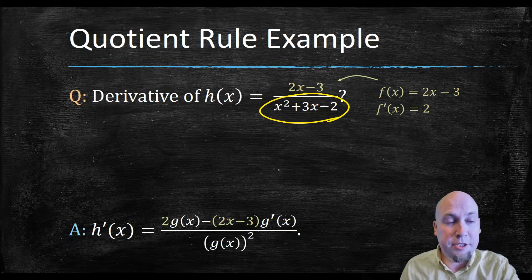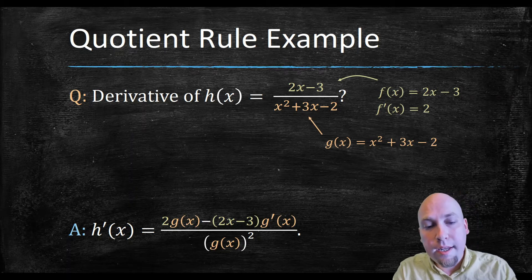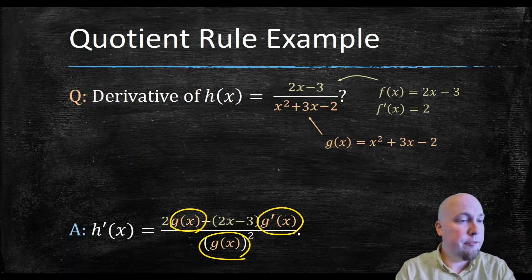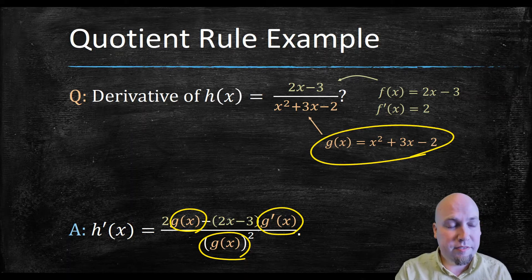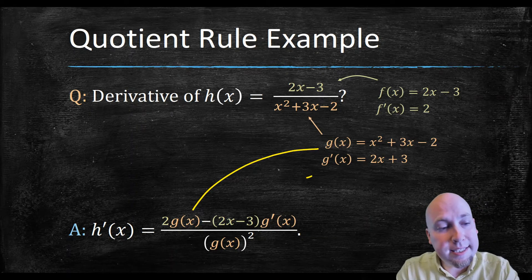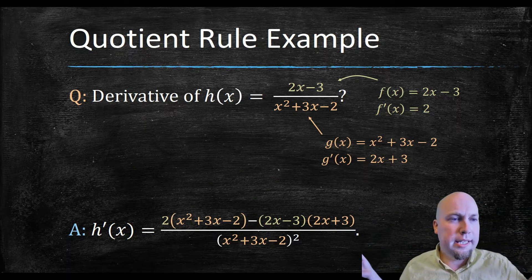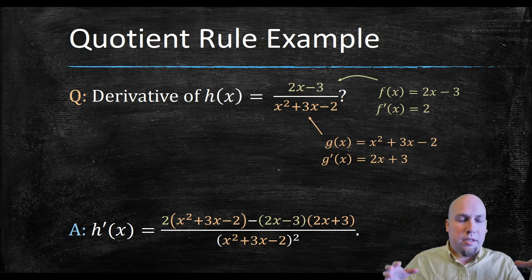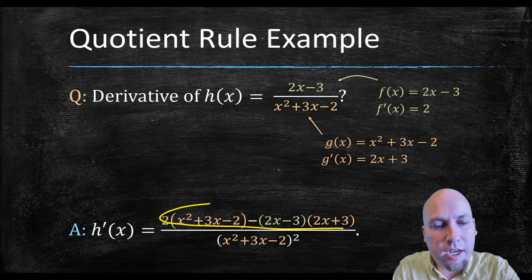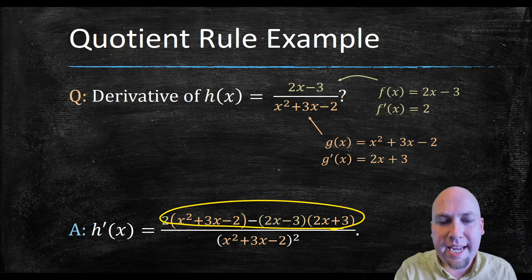Now I need to identify my g piece — the bottom of the fraction. So g(x) is x squared plus 3x minus 2. That goes in this slot and in this slot. But I also need g prime — the derivative of g. Using the power rule, the derivative of x squared plus 3x minus 2 is just 2x plus 3. Now I plug these into the different slots in the formula, and I get this big, long, ugly mess. At this point we're done all of our calculus — we've done all the differentiating we need to do — but we'll go one step further and simplify. I'm going to combine as many terms on top as I can.